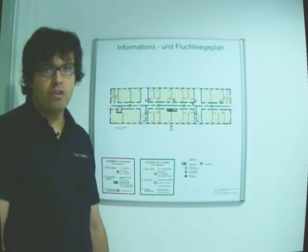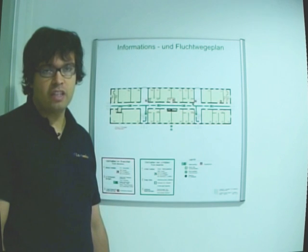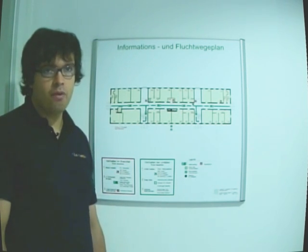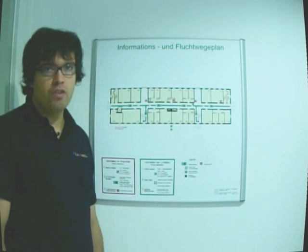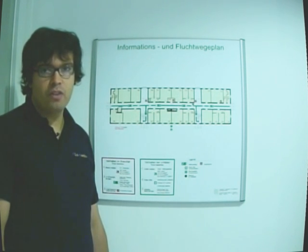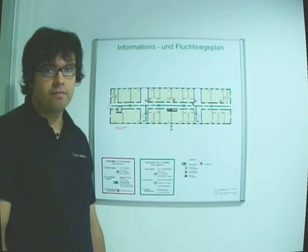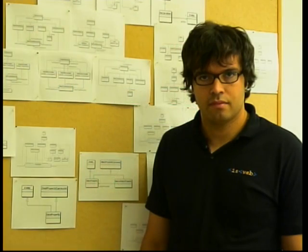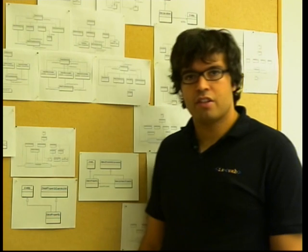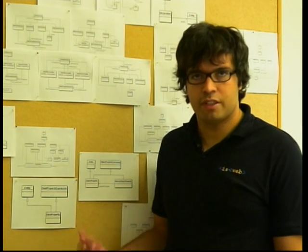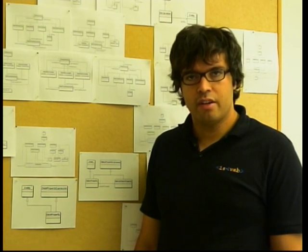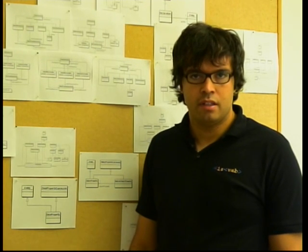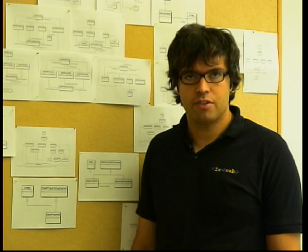To represent models, we use different notations according to the knowledge area. For example, in architecture, we use blueprints to represent buildings and bridges. And of course, notations to model software. In software engineering, we use notations like UML, the Unified Modeling Language.